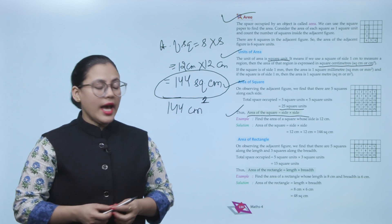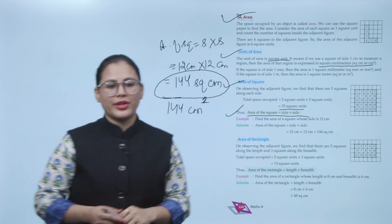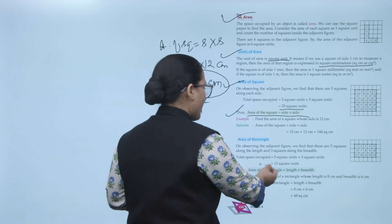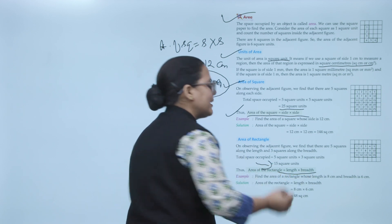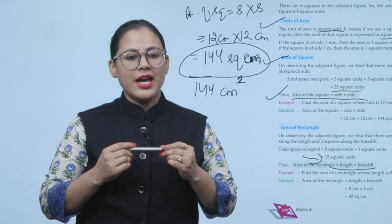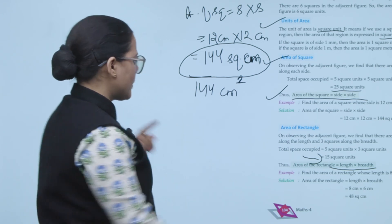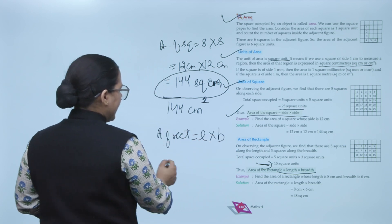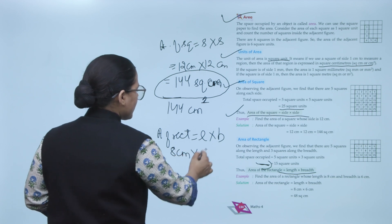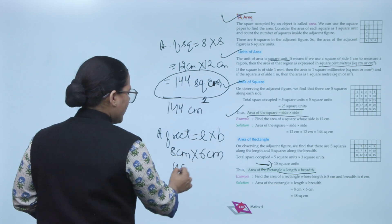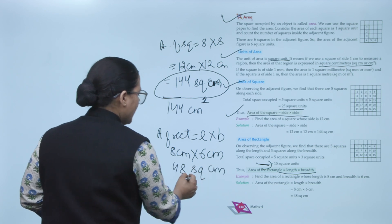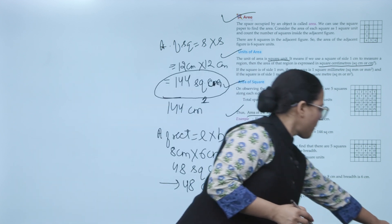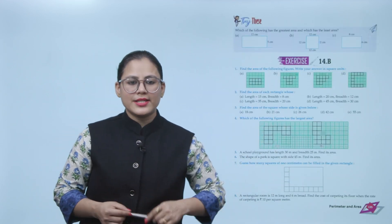Area of a rectangle: there are 5 squares along the length and 3 squares along the breadth. Total space = 5 × 3 = 15 square units. Thus, area of rectangle = length × breadth. Example: length = 8 cm, breadth = 6 cm; area = 8 × 6 = 48 square centimeters (48 cm²).